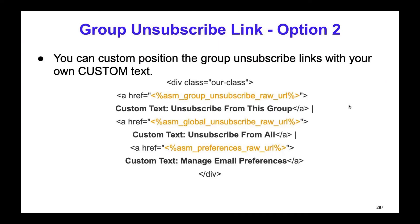Now let's look at how to custom position the group unsubscribe link with your own custom text. This is similar to the previous step, but here you can embed custom text — very useful if you have your own language or don't like the default text. The bold text you see — 'Custom text unsubscribe from this group' — is just an example. You can change the custom text for unsubscribe from all, manage email preferences, and so on. These are all customizable in your own HTML snippet.